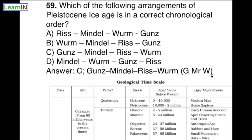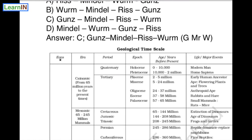Now, to understand the context: this is the geological time scale. The longest duration is an aeon, then era, then period, then epoch. We are talking about the Pleistocene epoch. Pleistocene and Holocene are epochs within this time scale. In the Pleistocene epoch — spanning roughly ten thousand to two million years — there are four ice ages: Gunz, Mindel, Riss, and Wurm. After Wurm comes the Holocene epoch.